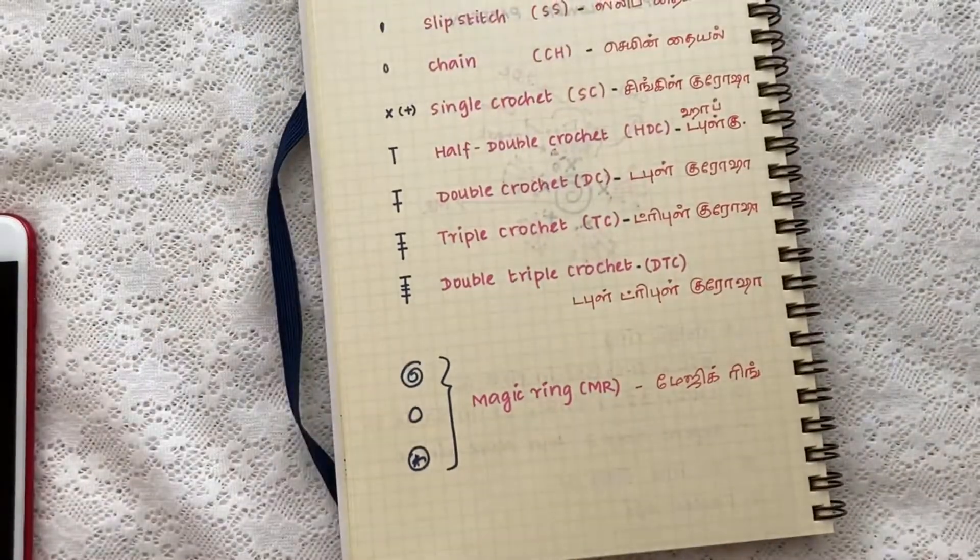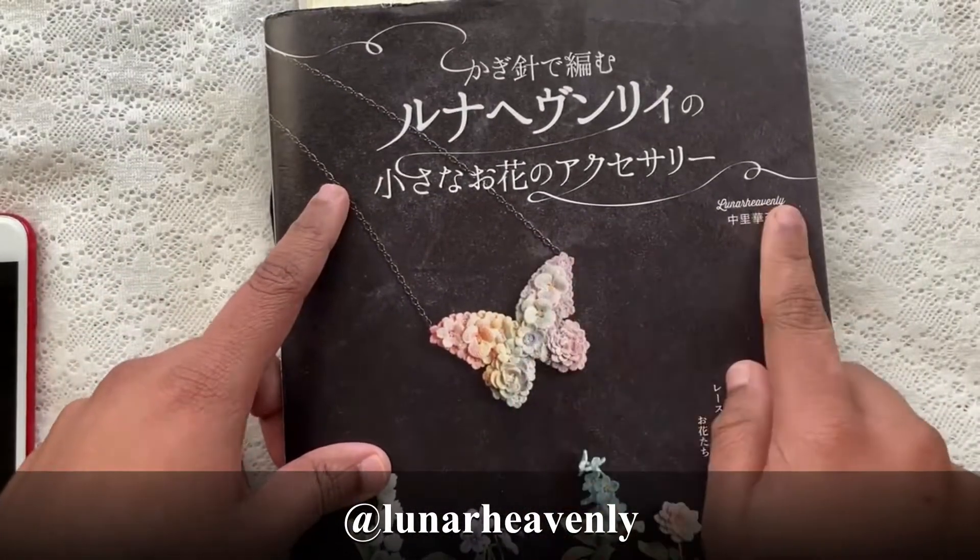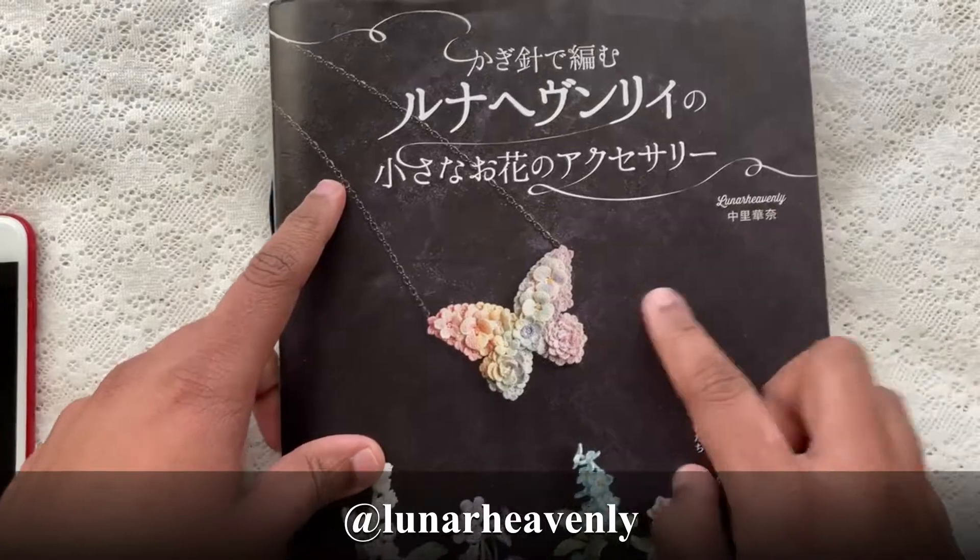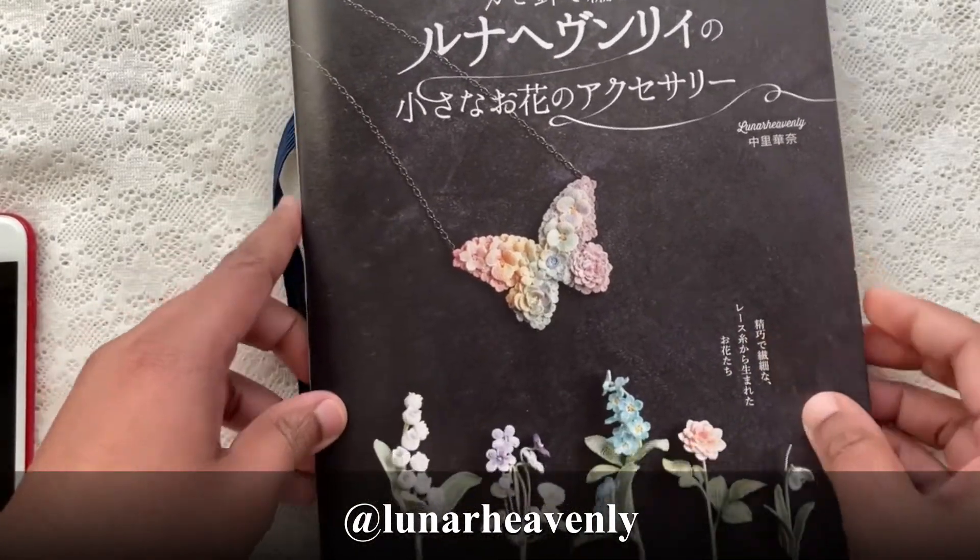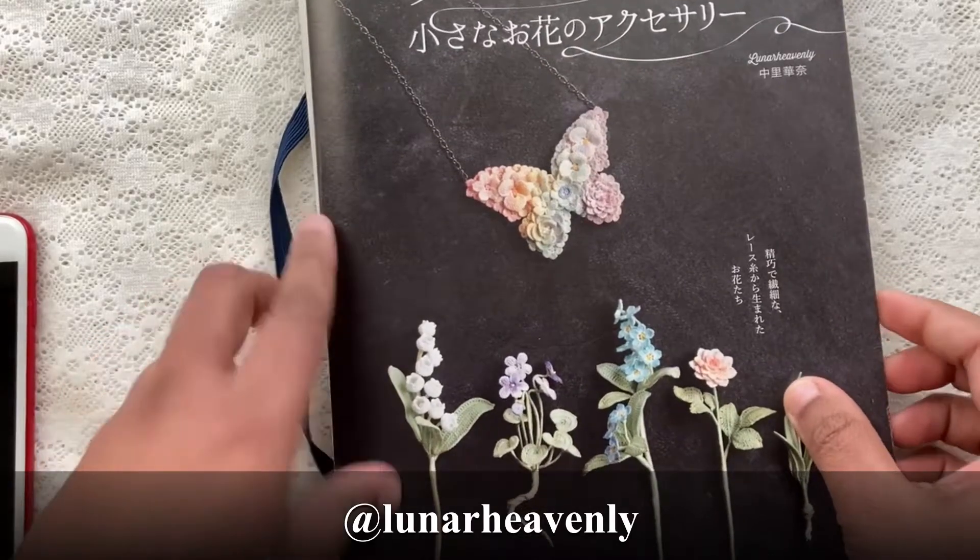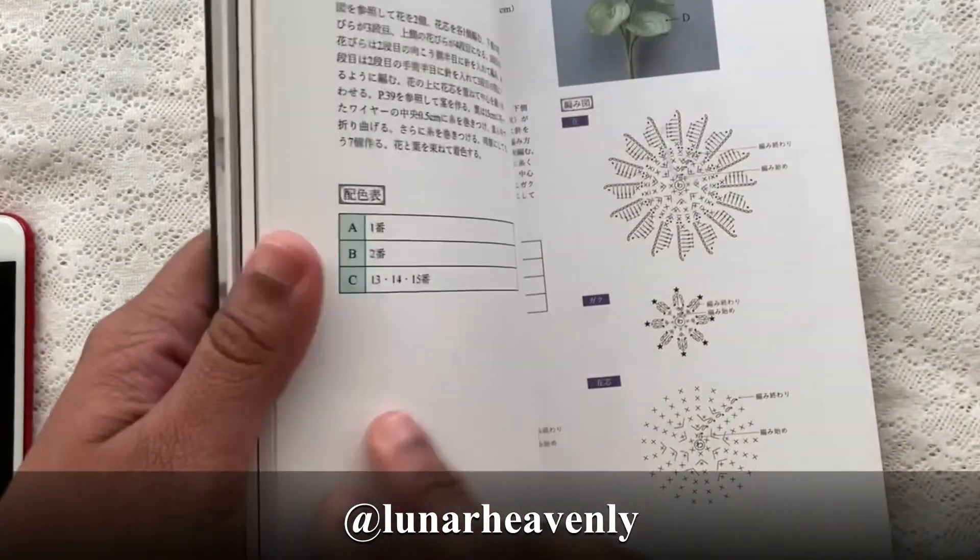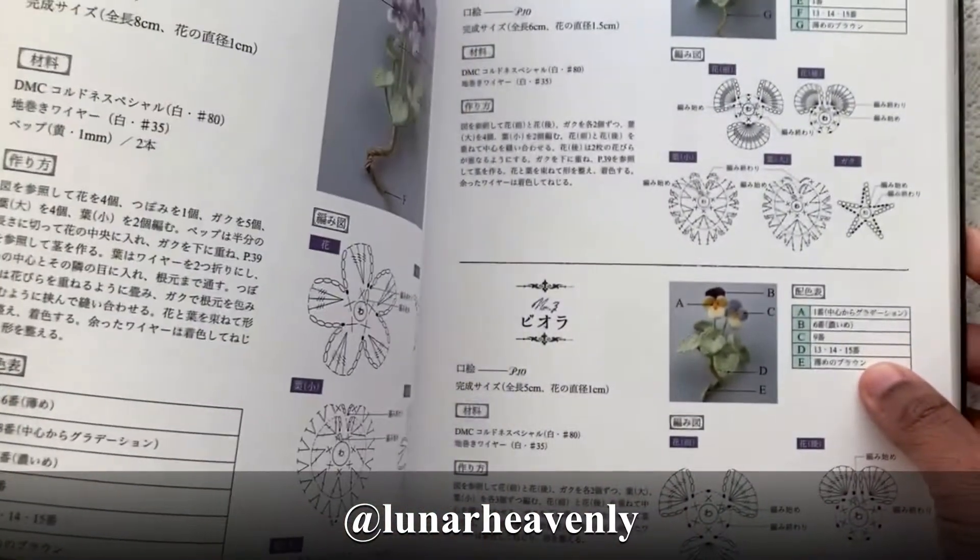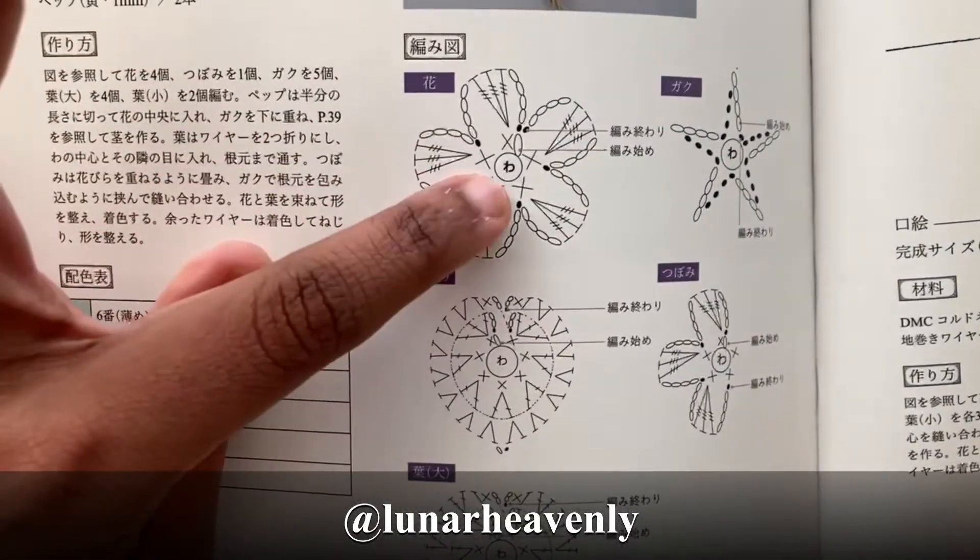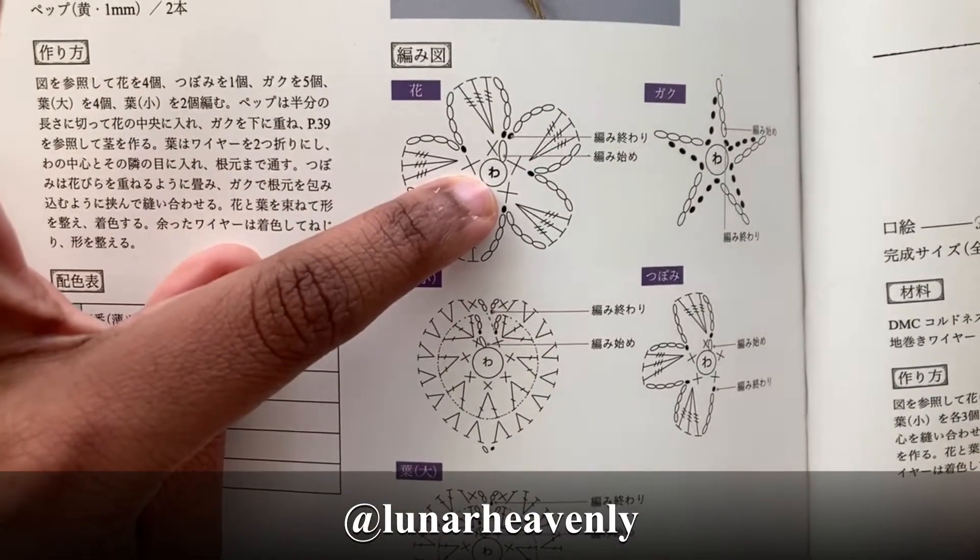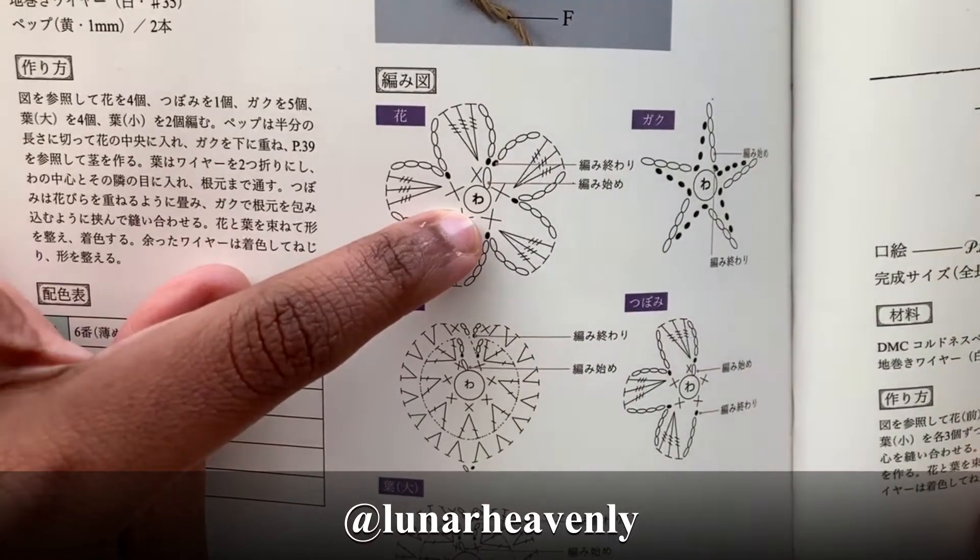Let me show you one Japanese pattern, the book from Lunarheavenly. Lunarheavenly is one of the famous crochet artists who creates hyper-realistic flowers. So let's open the book and let's see about this pattern. If you see this pattern you can see the magic ring is represented with the Japanese symbol alphabet WA.